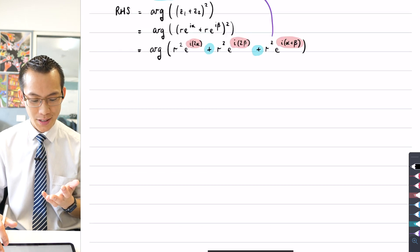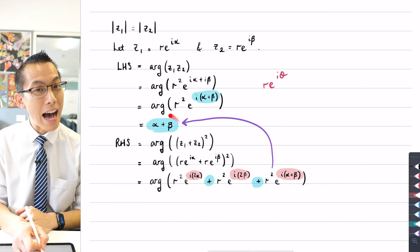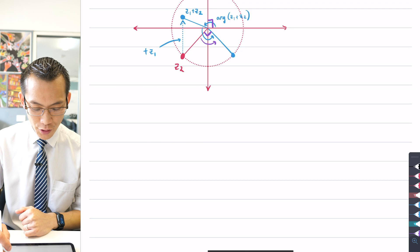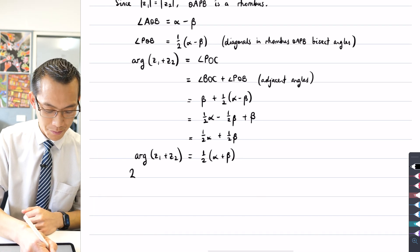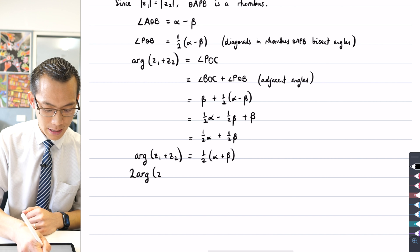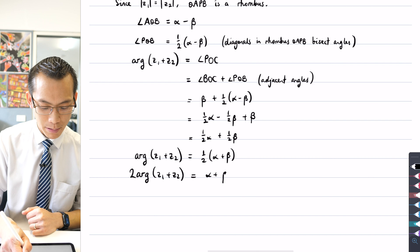We already worked out from our first failure of a proof that where I'm trying to get to is alpha plus beta. And I have got that angle, but exactly half here. So what should I do? I should double the argument here. Z1 plus Z2 equals just alpha plus beta.